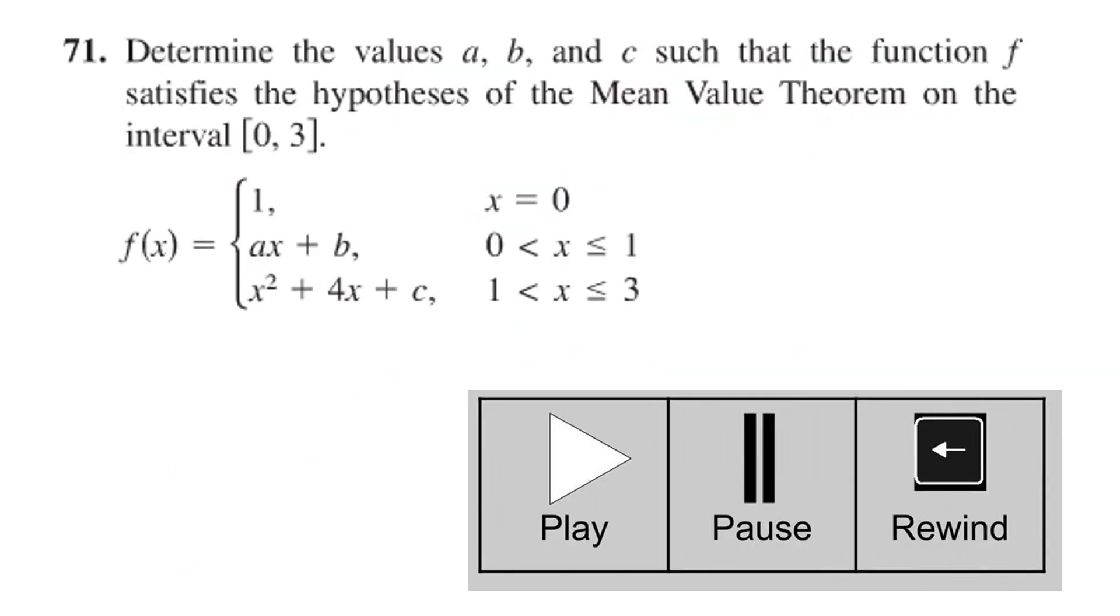One final problem I think that we'll do is this one. Determine the values for a, b, and c such that the function f satisfies the hypothesis, that's the if part of the mean value theorem on the interval 0, 3. And so there is an f of x, a piecewise defined function. You should pause this, look at your notes, and try to solve this problem. There is value in trying to solve problems. And then we'll come back and look at a solution.